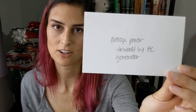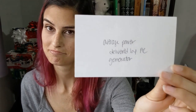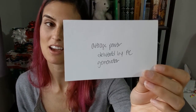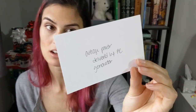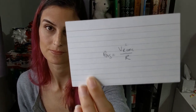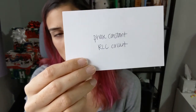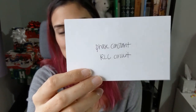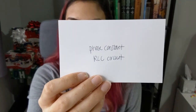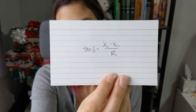The average power delivered by an AC generator: P average equals the RMS voltage across the resistor squared over R. The phase constant of an RLC circuit is given by tangent of delta, where delta is the phase, equals X sub L minus X sub C over R, where those are the different reactances.